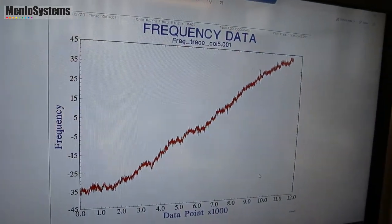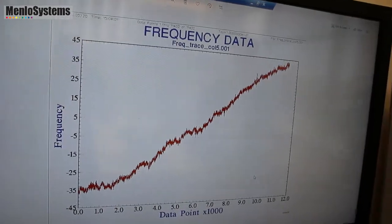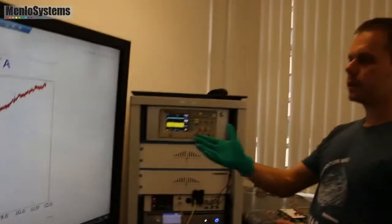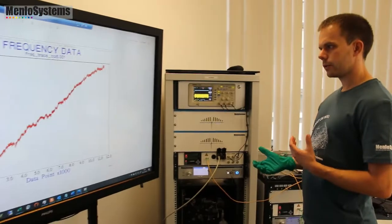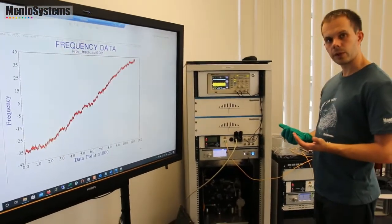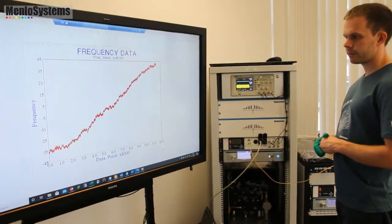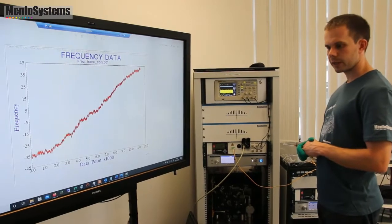And so now what you see here is basically a linear drift. And that is due to the shrinking of the cavity. So the cavity shrinks over time. And here we have a linear shrinking. You always see the difference between the two cavities. But in that case it's roughly 70 millihertz per second.